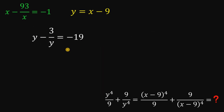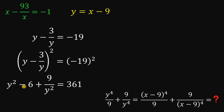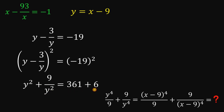Using this equation, we can now get the value of y raised to the fourth power over 9 plus 9 over y raised to the fourth power. First, let's square both sides. So y minus 3 over y squared gives us y squared minus 2 times y times 3 over y — which simplifies to negative 6 — plus 9 over y squared equals negative 19 squared, which is 361. Adding 6 to both sides, we have y squared plus 9 over y squared equals 367.